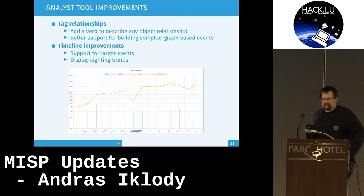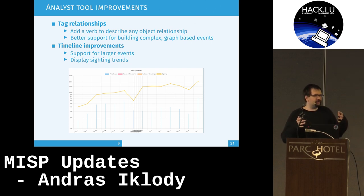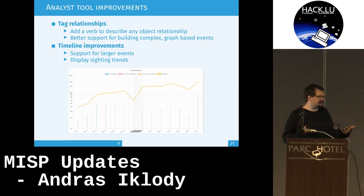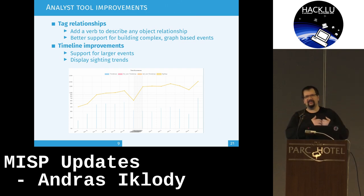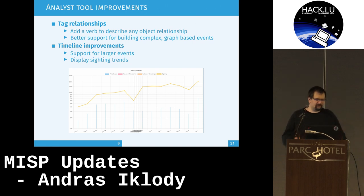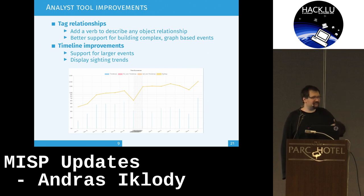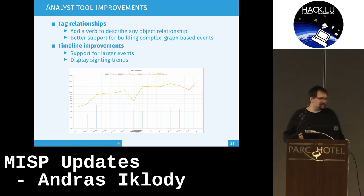We've also been improving the analyst tools in MISP, including more precise tag relationships. Previously, a label was simply attached to data points with no context of why or how it interacts with that data. Now we can add a verb and further describe those relationships. This allows us to build more meaningful graphs out of our data, tell a better story about what's happening, and better translate to other formats.